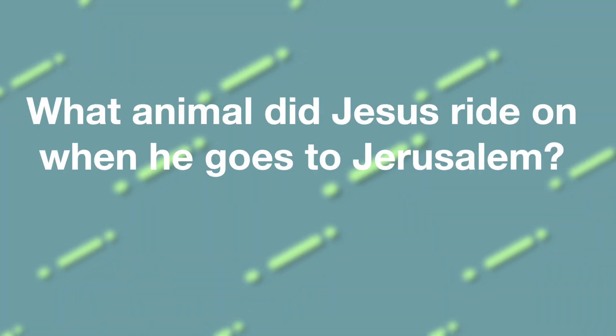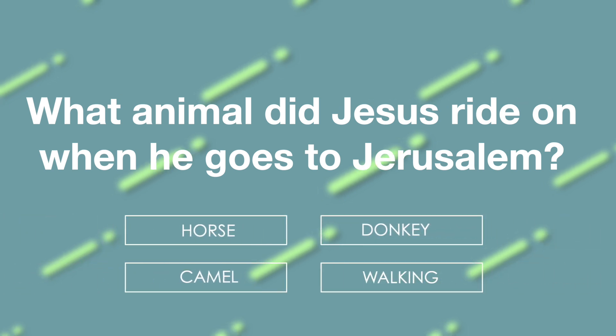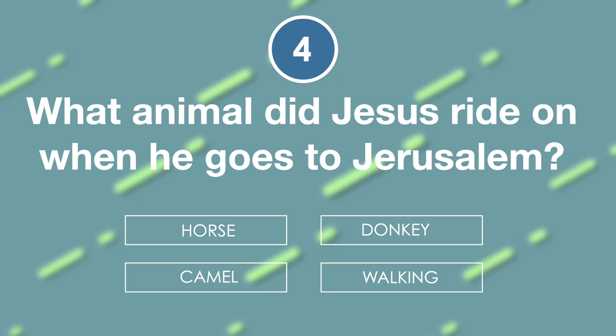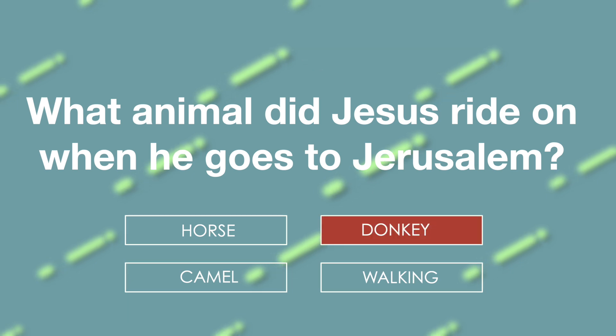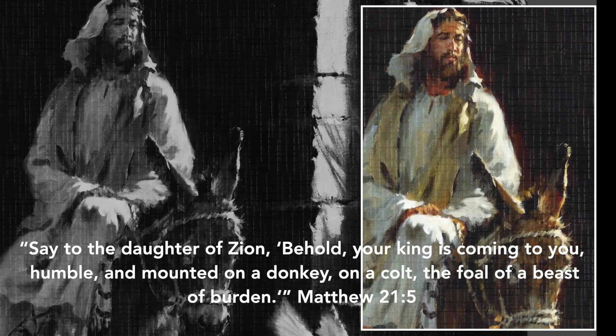What animal did Jesus ride on when he went to Jerusalem? Is it horse, donkey, camel, or donkey? The answer is donkey. 'Say to the daughter of Zion, Behold, your king is coming to you, humble, and mounted on a donkey, on a colt, the foal of a beast of burden.' Matthew chapter 21 verse 5.